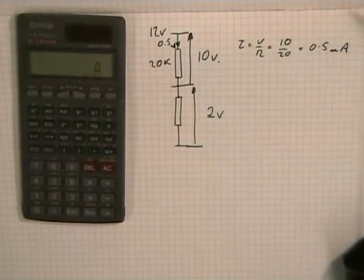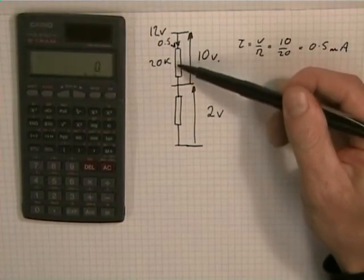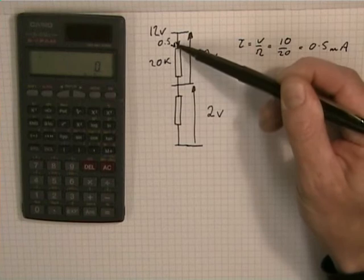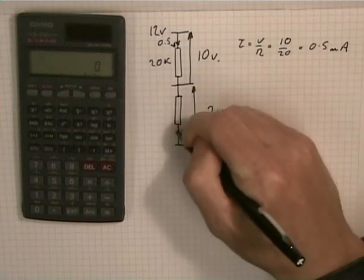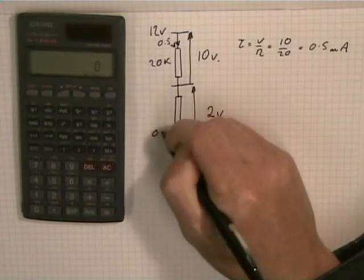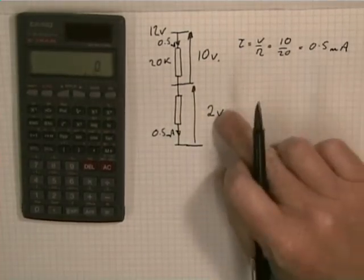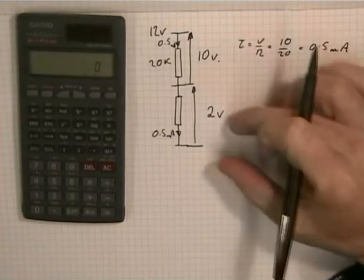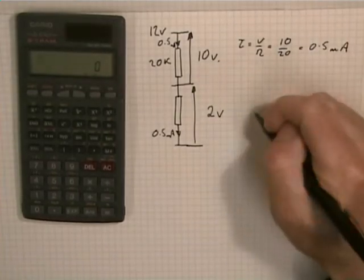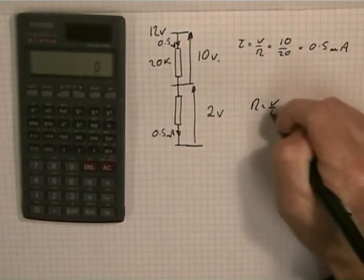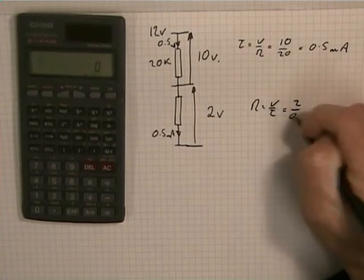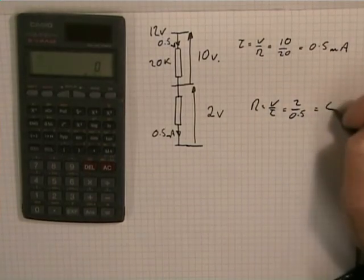There's only one path for the current to take, so all the current must flow down through here. So it's half a milliamp up there, it must be half a milliamp down here. We now know two things down here: the voltage and the current. So R equals V upon I equals 2 over one half equals 4k.